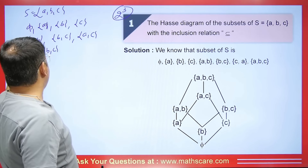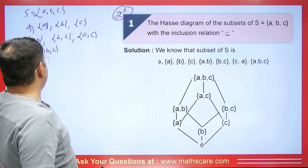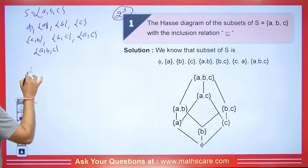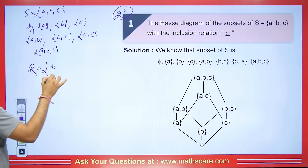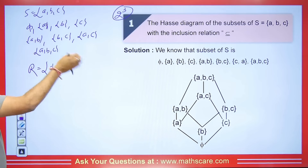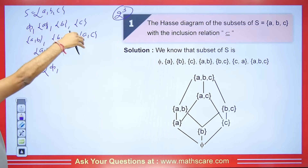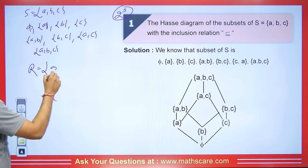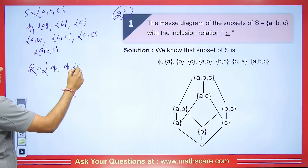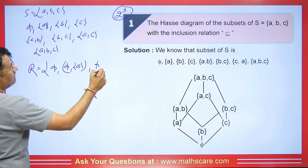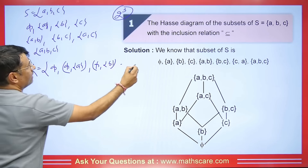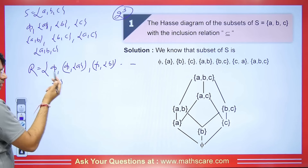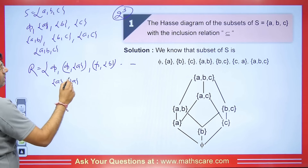To make the Hasse diagram, we use the subset relation. φ is a subset of everything — of A, B, C, and so on. A is a subset of AB and AC and ABC. We write phi with everything. Phi is a subset of itself, and also a subset of A, B, and C.